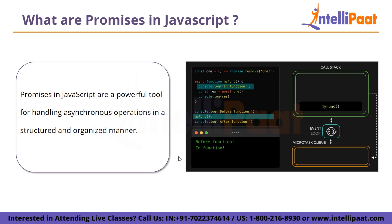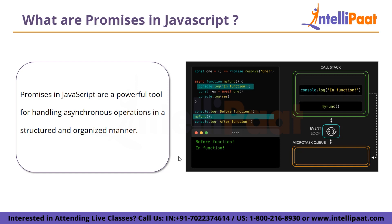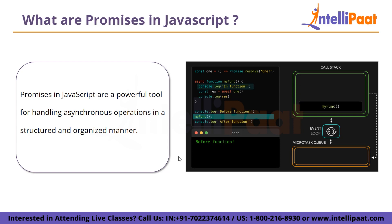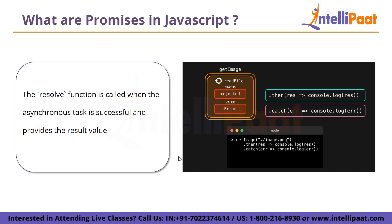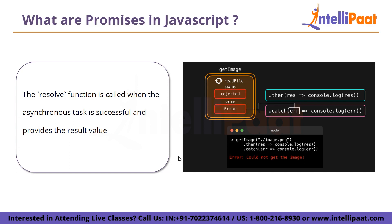Creating a promise involves the promise constructor. Inside the constructor you define the asynchronous operation, which often involves tasks like making network requests or reading files. The constructor takes a callback function with two parameters: resolve and reject. These functions are used to signal the promise state. The resolve function is called when the asynchronous task is successful and provides the result value; the reject function is called when the task encounters an error.